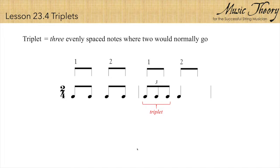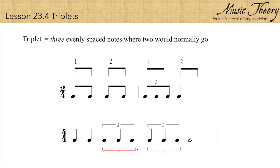You can write triplet eighth notes in the space of two eighth notes, and also triplet quarter notes in the space of two quarter notes. We write a three over the triplets to help the reader know that these are to be performed as triplets.